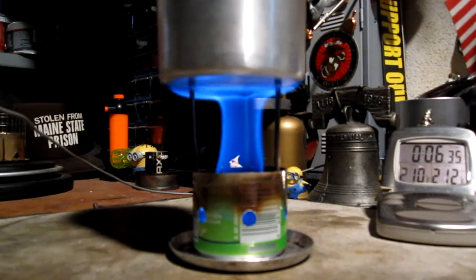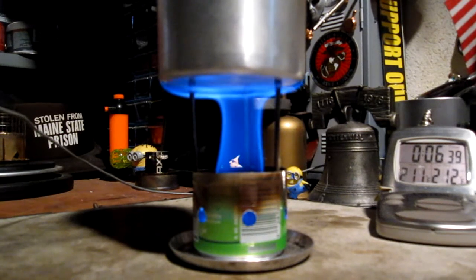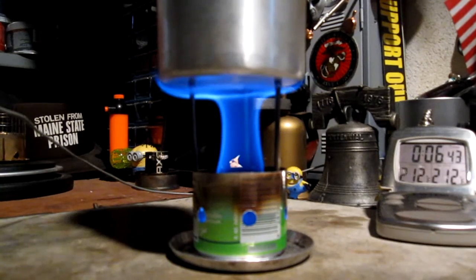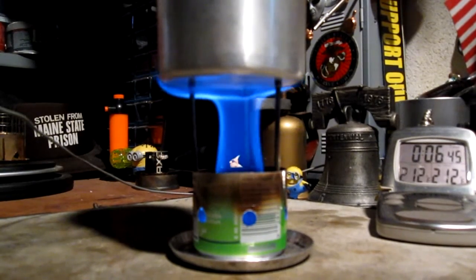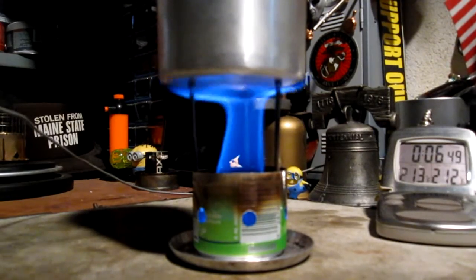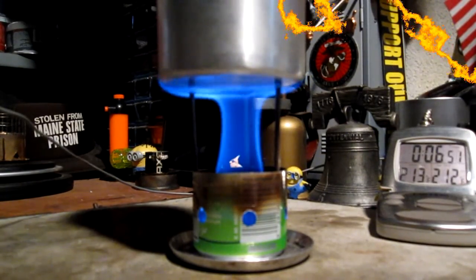There we have 210, 211, 212 in 6 minutes, 40 seconds. Not too bad for a bent up stove. Now, let's see how long this goes for run out.